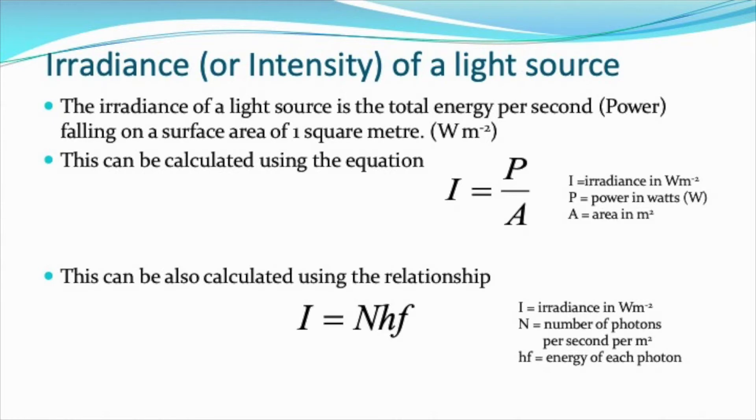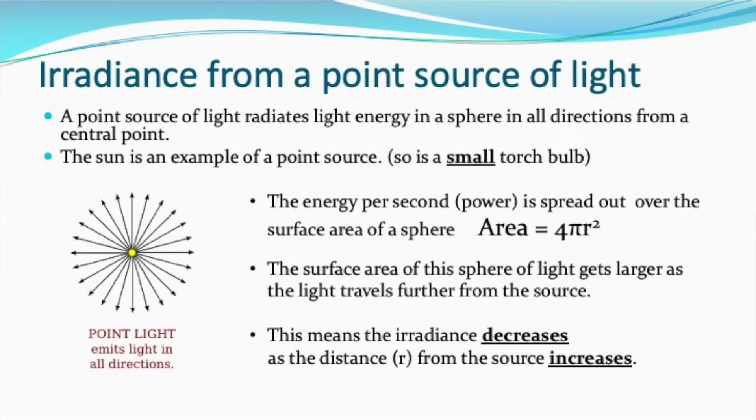For the moment, irradiance is power per square meter. Now if we think about a point source of light, that's a source of light that emits its light energy in all directions from a small central point. For example, our sun is an example of a point source, and so is a small torch bulb.